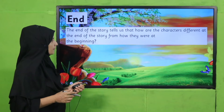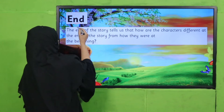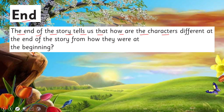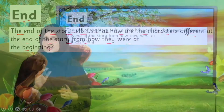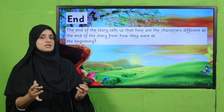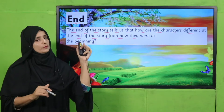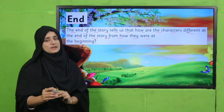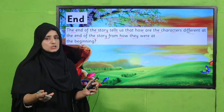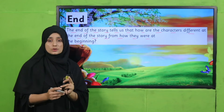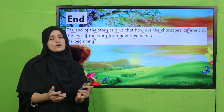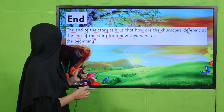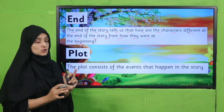The End of the story tells us how the characters are different at the end from how they were at the beginning. In any story you can judge what the beginning was, what situation was faced in the middle, and how things turned out at the end. The end tells us about a character who faced many situations during the story. All of these — beginning, middle, and end — are parts of the plot.